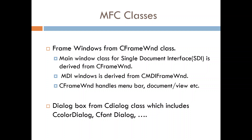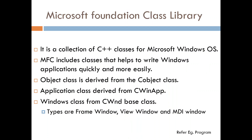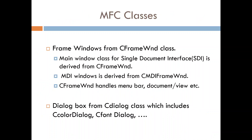Just as in VB we studied common dialogues, in VC++ you also have a dialogue class. Using it you can create a color dialogue, font dialogue - same as the common dialogue boxes. The basic class for creating dialogue boxes is called CDialog. From CDialog you can derive CColorDialog, CFontDialog, COpenDialog, and SaveDialog - the same as your common dialogue boxes. To summarize: remember CObject class, CWinApp class, CWnd class, CFrameWnd, and CMDIFrameWnd.